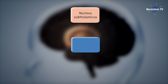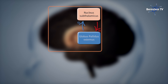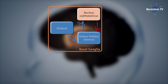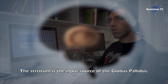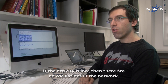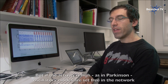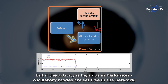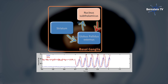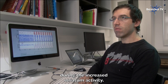Theoretical models to explain the rhythmic neuronal activity have often only considered two regions of the basal ganglia that show these oscillations, while the influence of a third region — the striatum — was mostly ignored. Scientists in Freiburg have now included this region in their mathematical model and found that the striatum has an enormous impact on the emergence of neuronal oscillations. The striatum is the input source of the globus pallidus, and if its activity is low, there is no oscillation in the network. If the striatum activity is high, as in Parkinson's, then oscillations are present in the network.